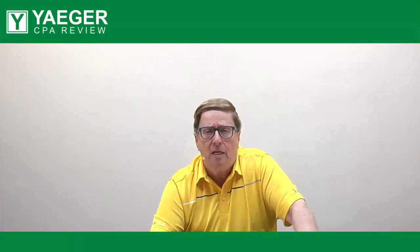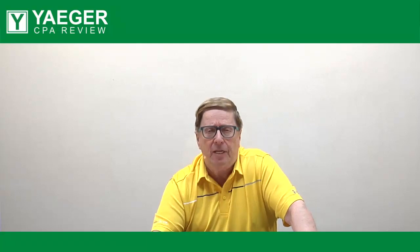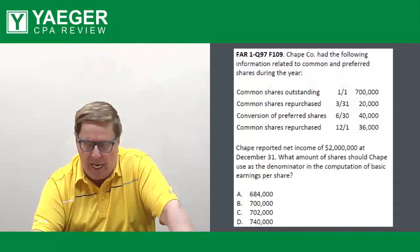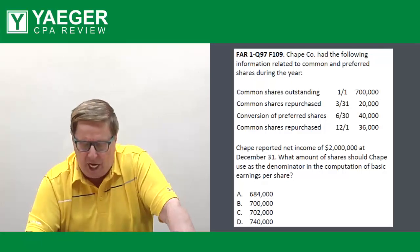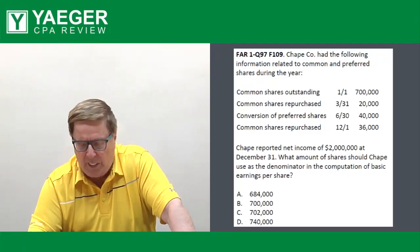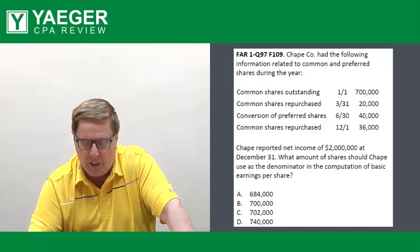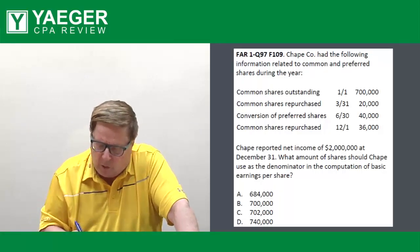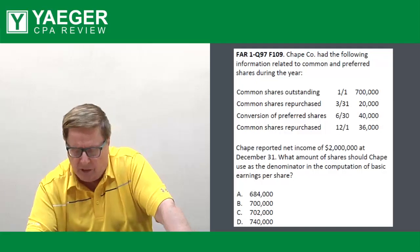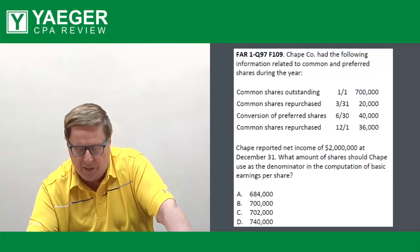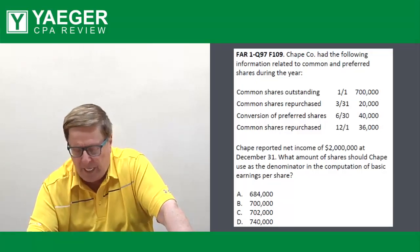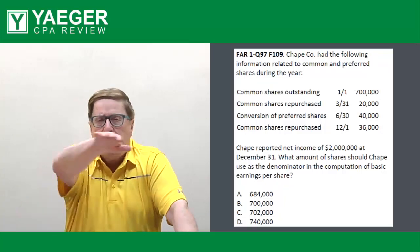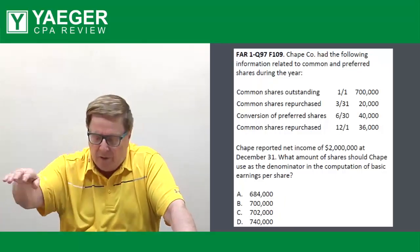Now I'm going to show you a quick simple method of calculating a weighted average number of shares. We read the question that says Chape had the following information related to common and preferred shares during the year, and let's go to the requirements. Requirements say what amount of shares should Chape use as the denominator in the computation of basic earnings per share. So we have to do the denominator, which is the weighted average number of shares.